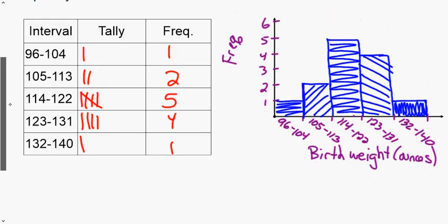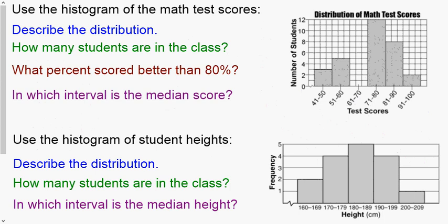All bars are touching, all the same width, and all shaded differently. If asked to describe this distribution, the lowest bars are on the very edges and the highest bars are in the middle, so this is a normal distribution. Now let's talk about interpreting a histogram — they give you a histogram and we need to interpret it.